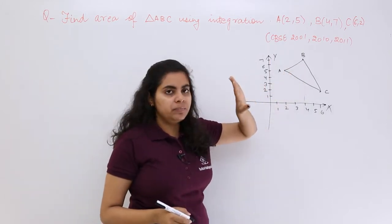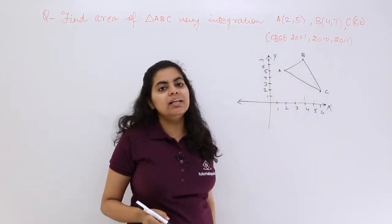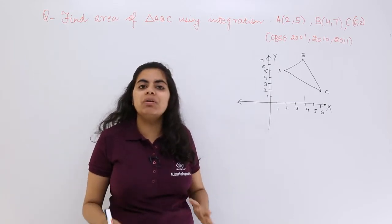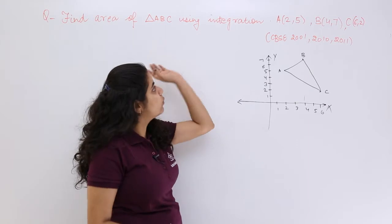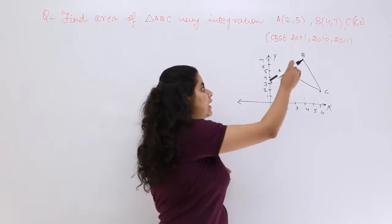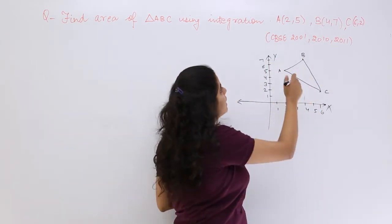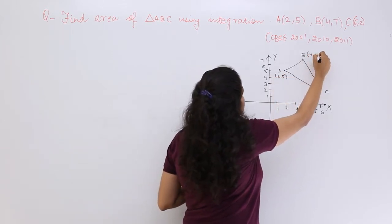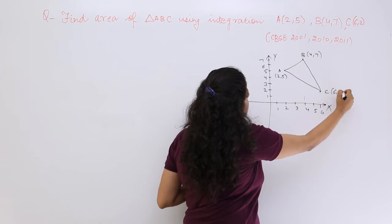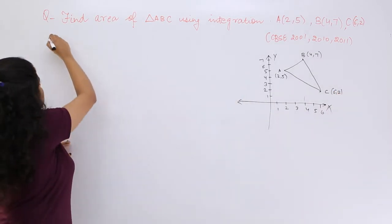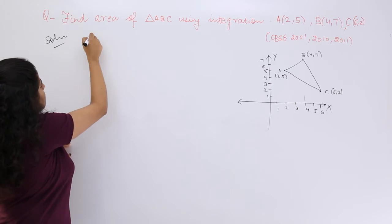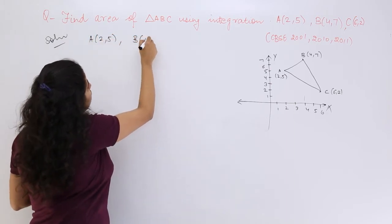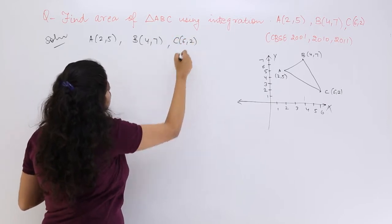As you can see this is a triangle and directly I cannot find it. I have to use integration, so I have to use some manipulation. First, at least for integration we must be knowing some equations. There is no equation given in the question. Let's find out individually the equation of all these three lines. So this was (2,5), this was (4,7), this was (6,2). Let me write those points again in the solution: A is (2,5), B is (4,7), C is (6,2).